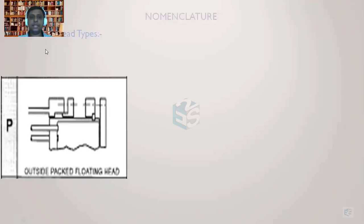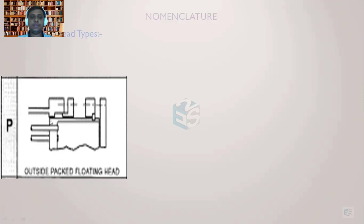To understand the construction: the tubes come in and are attached to a tube sheet. That tube sheet is integral with the channel side. This entire assembly can move to the right side, as it is a floating type.